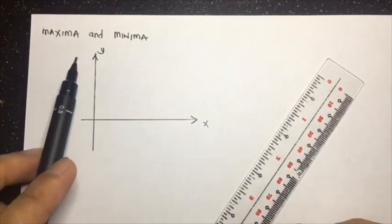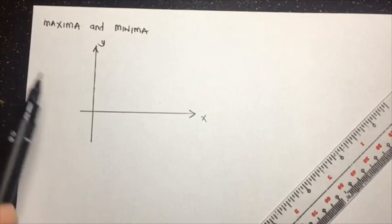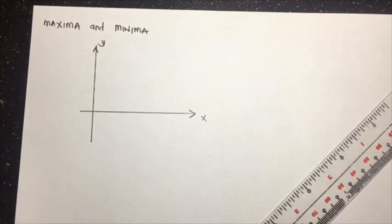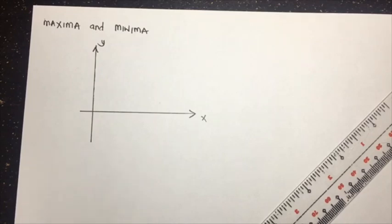For this video, we will be discussing maxima and minima. Maxima and minima are the points in our curve where there is a change in the trend of the graph from increasing to decreasing or from decreasing to increasing.